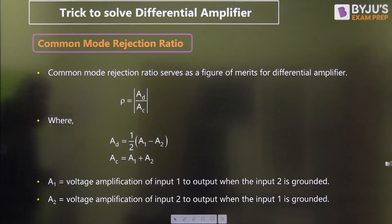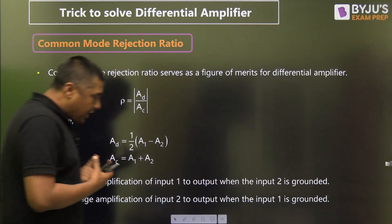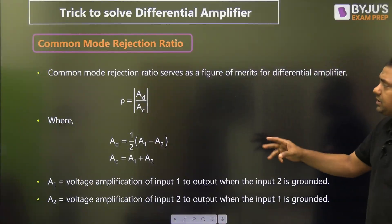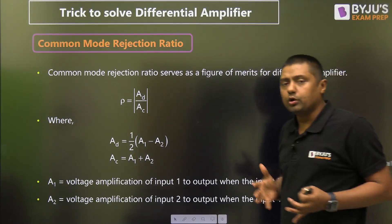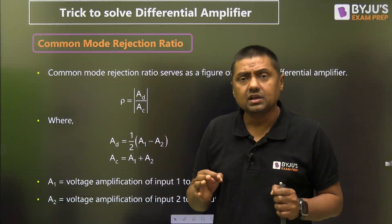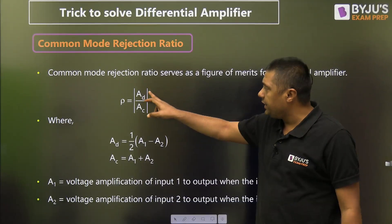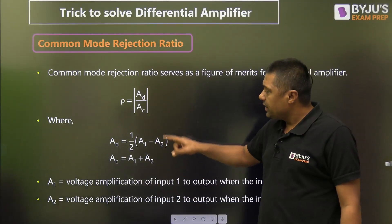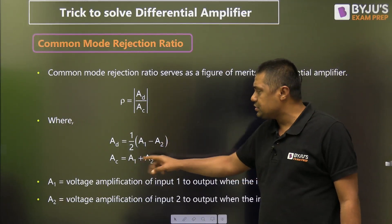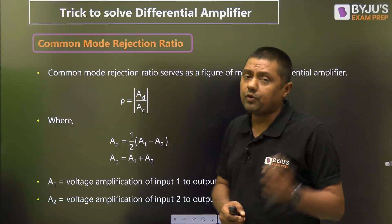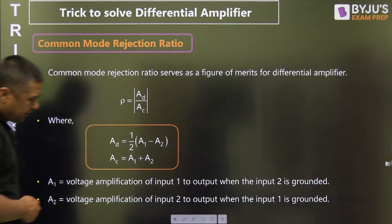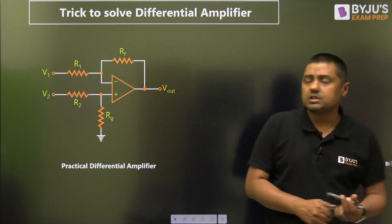When dealing with a practical differential amplifier, there are three important parameters: one is called difference gain, one is called common mode gain, and the next one is called CMRR — common mode rejection ratio. CMRR is A_D divided by A_C. A_D equals (1/2)(A1 minus A2) and A_C equals A1 plus A2. We will find A1 and A2 for this particular numerical. This is Trickopedia, so you will get short tricks to solve these types of questions.